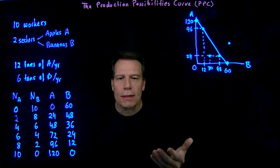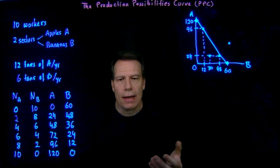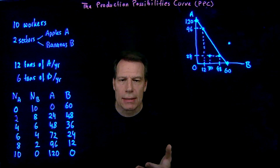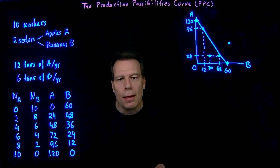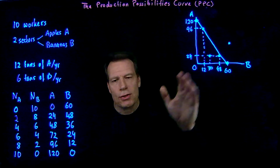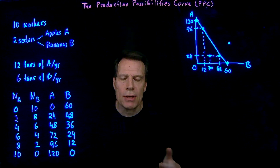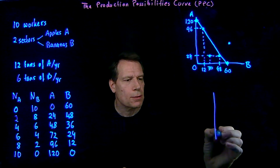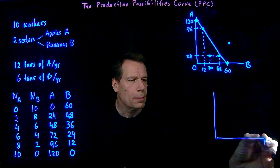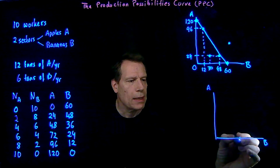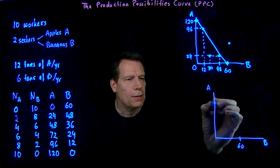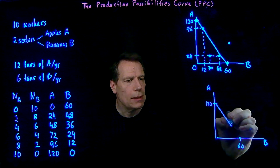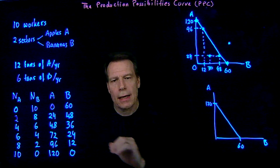So we have a curve that illustrates, at any given time, the production possibilities of an economy — the productive capacity of an economy. We could then ask how that changes if something in the economy changes. Suppose we start again with the same production possibilities curve. We had 60 here and 120 here, and this was our initial production possibilities curve for this economy.